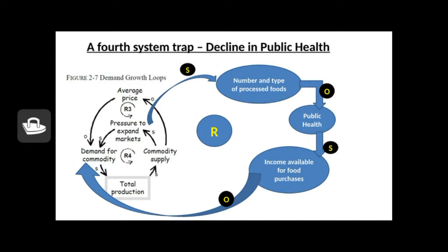Here's the fourth system trap as described in one of my previous classes. As commodity supply increases, the number and type of processed foods increases, moves in the same direction. As processed foods increase, overall public health goes down. As public health goes down, income available for food purchases may also go down. And as you have less money available for food purchases, what happens to commodities? Commodities go up. The increase is increasing demand for cheap processed foods, making this system function in a direction in which public health is always going to be driven down by the commodity system.